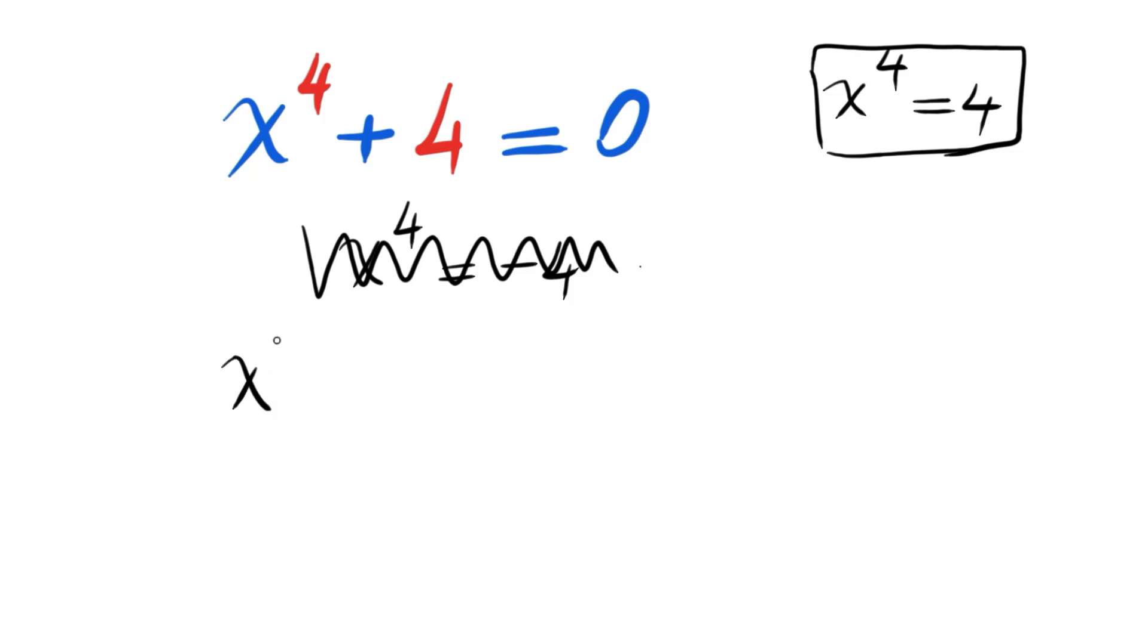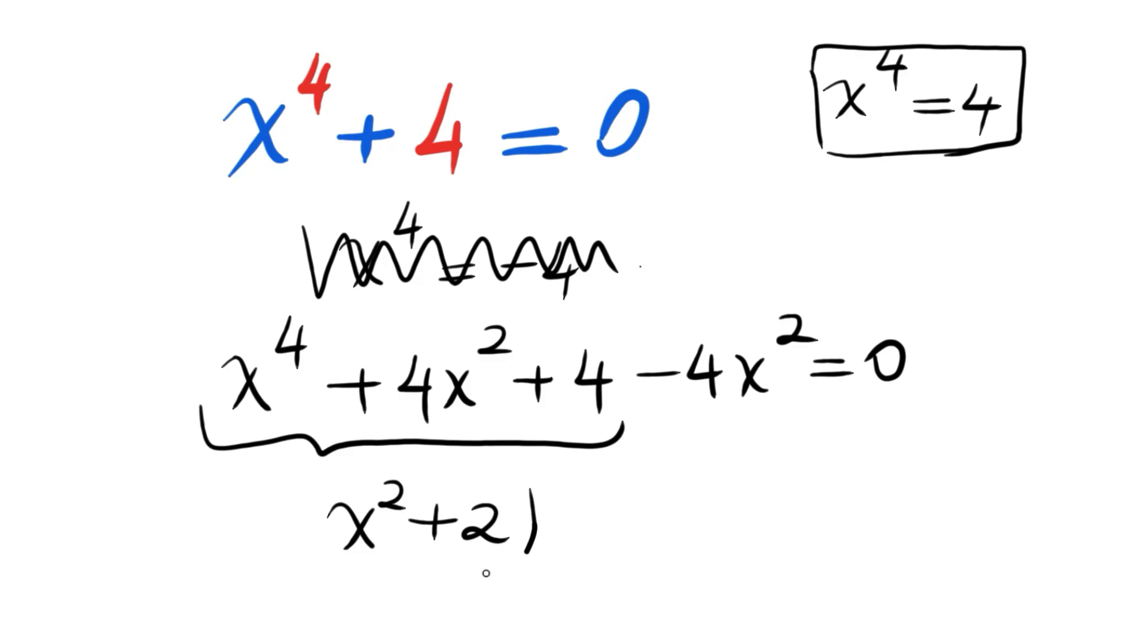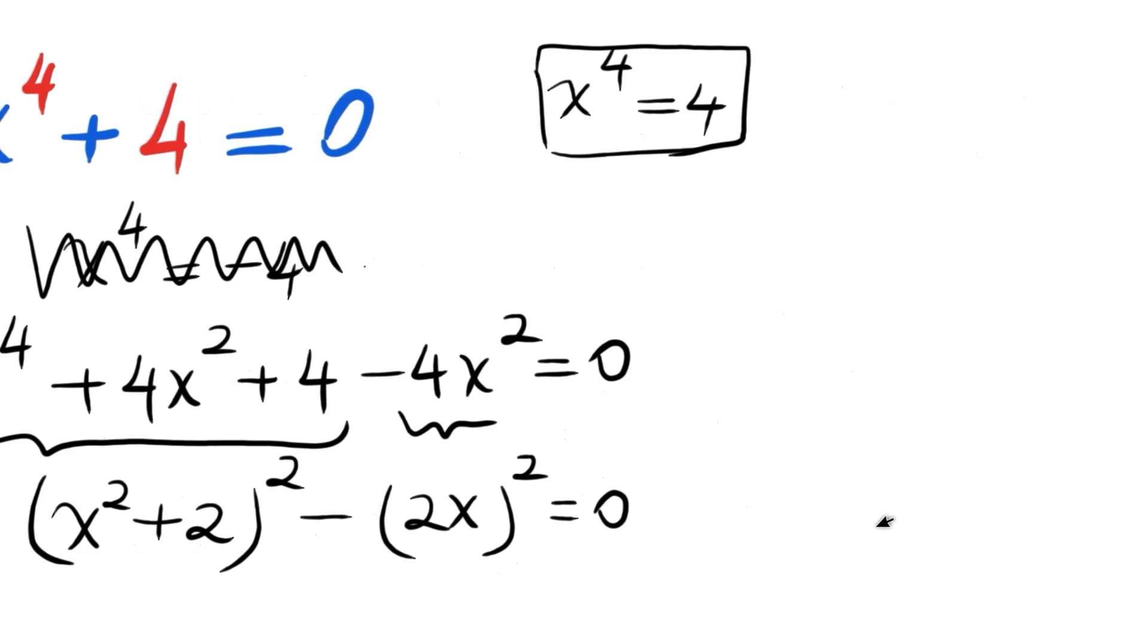That is: x^4 plus 4x squared plus 4, and minus 4x squared. This is to complete the square. For completing the square, since this is now the square of (x squared plus 2), and the second one is also a full square which is (2x) squared, that equals 0. So we have difference of squares here.